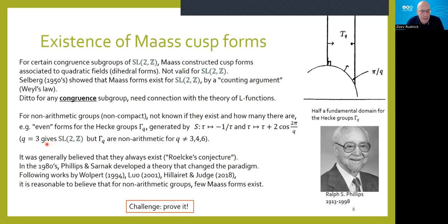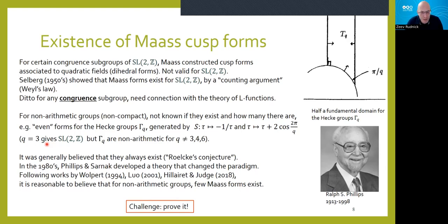One of the fundamental insights of Peter Sarnak's work with Ralph Phillips is that Maass cusp forms probably don't exist for non-arithmetic groups unless there's an arithmetic reason. Following a series of works by Phillips and Sarnak, Scott Wolpert, Wenjie Luo, and more recently by Luer and Chris Judge, it is now reasonable to believe that for non-arithmetic groups, few Maass cusp forms exist.